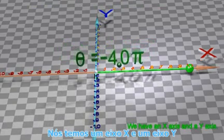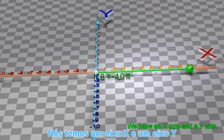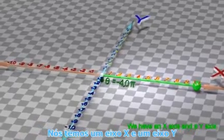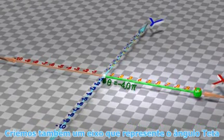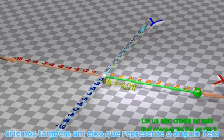We have an x-axis and a y-axis. Let us also create an axis that represents the angle theta.